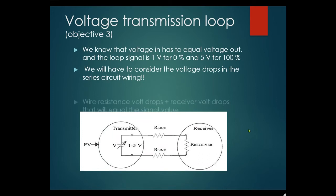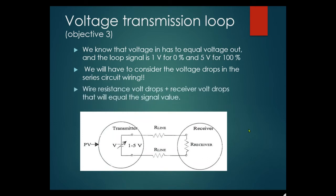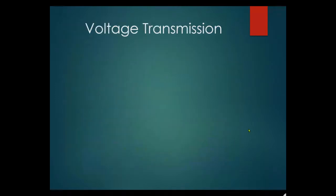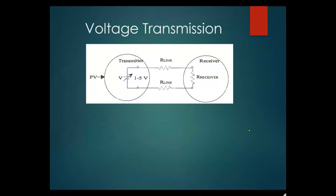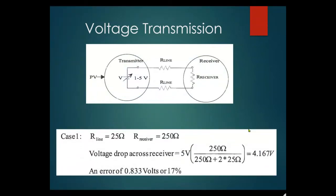In the series circuit, wire resistance voltage drops plus receiver voltage drops must equal the signal value. Case one: line resistance is 25 ohms, receiver is 250 ohms, supply is 5 volts. Voltage drop across the receiver: 250 divided by (250 + 2×25) equals 4.167 volts — I never get to the full 5 volt drop. That's an error of 0.33 volts or 17 percent.